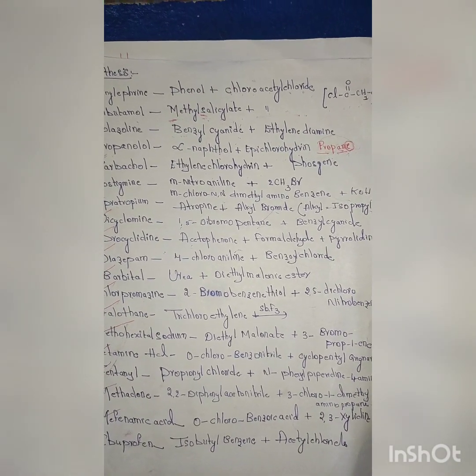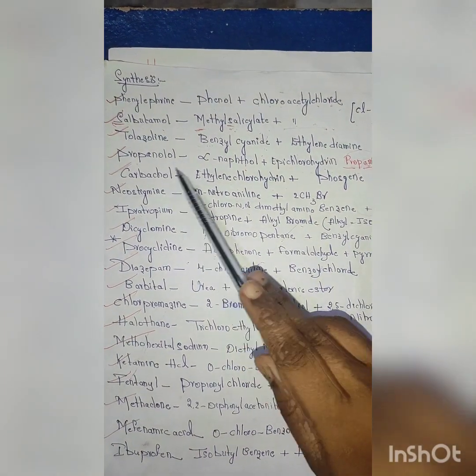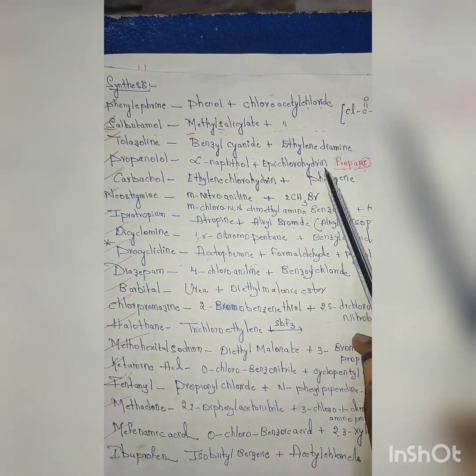So, the next drug for which we have to study synthesis is propanol. The synthesis of propanol includes the reaction between alpha naphthol and epichlorohydrin.